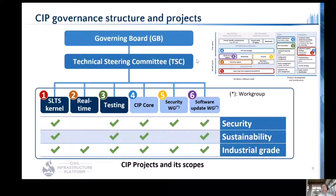CIP's governance structure has the governing board organized with platinum members, which decides CIP directions overall — like budget allocation and investment targets. All technical issues are discussed at the Technical Steering Committee, TSC. Under the TSC, six activities are proceeded as teams or working groups. We formed the CIP kernel team to work on SLTS kernel as well as real-time Linux. The testing team was formed to work on automated testing.